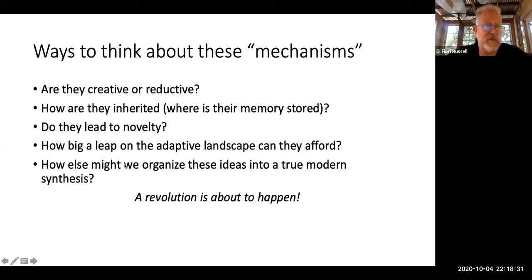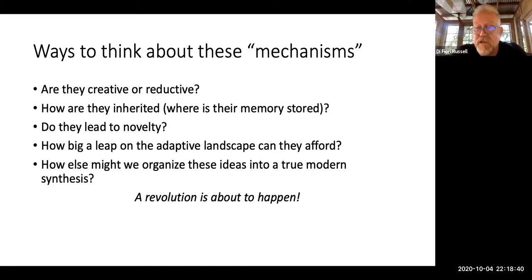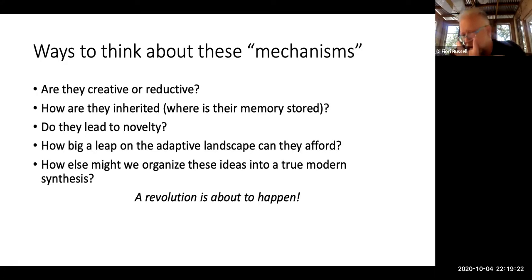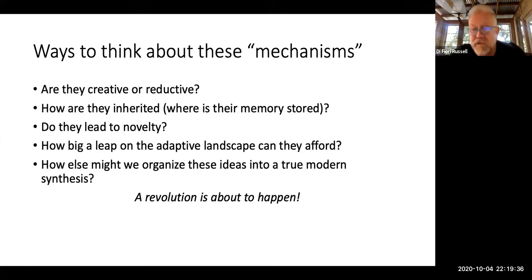So now we're sort of at the end. When you're looking at these mechanisms, think about: are they creative processes that generate novelty, or are they reductive processes that pick among the novel things? How are they inherited? Where is their memory stored? For instance, a coral reef's memory is stored in its structure — the memory of the coral reef is the coral reef. Whereas a new enzyme's memory is stored in the DNA. There are all kinds of examples where information is stored non-genetically yet is inherited and passed on. Epigenetics is a really good example of that.